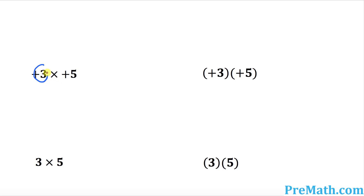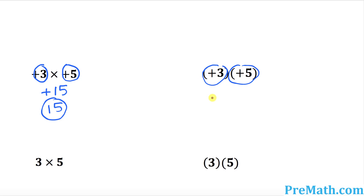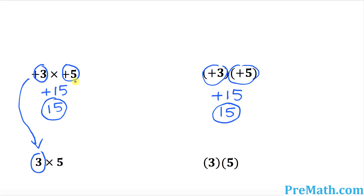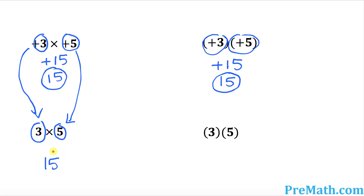Finally, positive three times positive five: positive times positive is positive, and three times five is 15. Likewise with parentheses, positive three times positive five is 15. You can also write it simply as three times five, since positive three is just three and positive five is just five, and three times five is always 15.